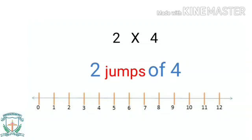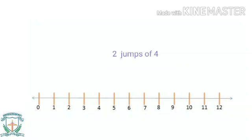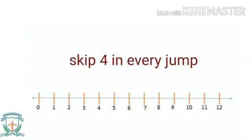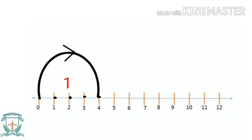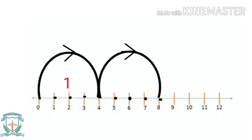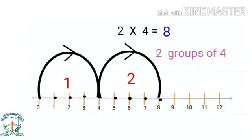Here we have two jumps of four, so we skip four numbers in each jump. Let us begin with zero: we count 1, 2, 3, 4 — this is the first jump. Then we skip another four numbers: 1, 2, 3, 4 — this is the second jump. Here we have reached eight. So two multiplied by four is equal to eight.